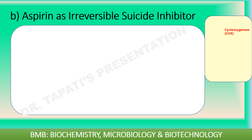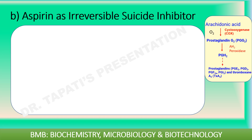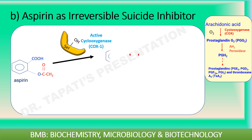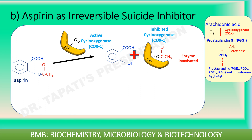Cyclooxygenase, known as COX, exists as COX-1 and COX-2. These are bifunctional enzymes carrying out two sequential reactions: the dioxygenation of arachidonic acid to prostaglandin G2 (PGG2) and the reduction of PGG2 to PGH2. Arachidonic acid oxygenation occurs in the cyclooxygenase active site, and PGG2 reduction occurs in the peroxidase active site. PGH2 is then converted by tissue-specific isomerases to produce prostaglandins and thromboxane. Aspirin irreversibly inhibits cyclooxygenase by acetylation of a serine residue, blocking the biosynthesis of prostaglandins and thromboxane.